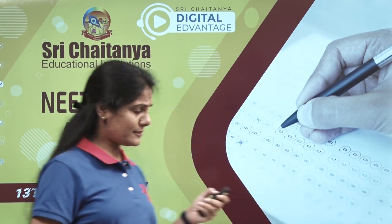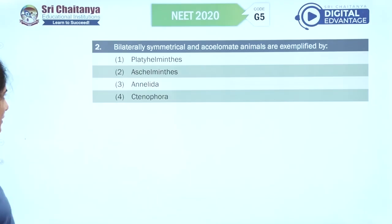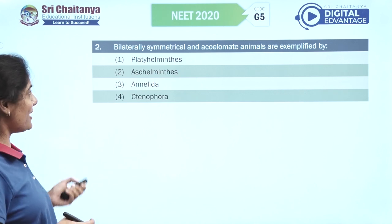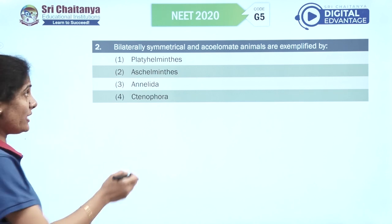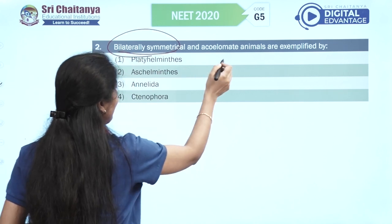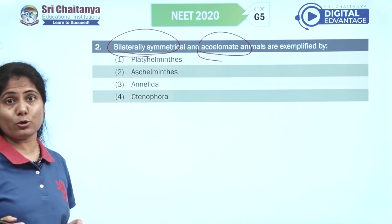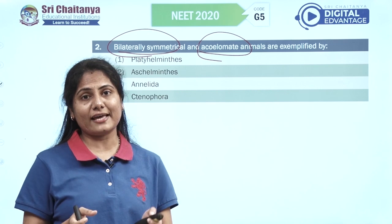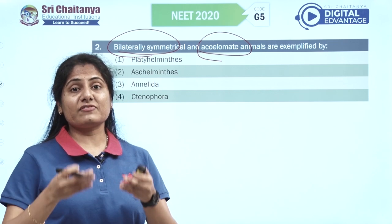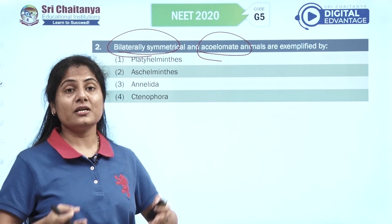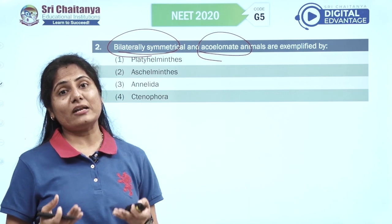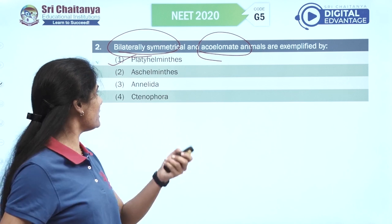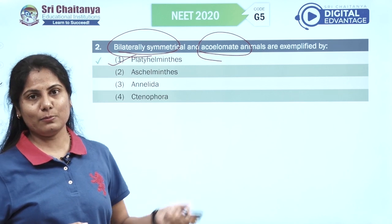Bilaterally symmetrical and acoelomate animals are exemplified by — the two keywords you should concentrate on: bilateral symmetry and acoelomate animals. Bilateral symmetry is when you cut an organism into two equal halves by a single plane of division. Acoelomate is one without a coelom, and of course you have the answer which is Platyhelminthes.